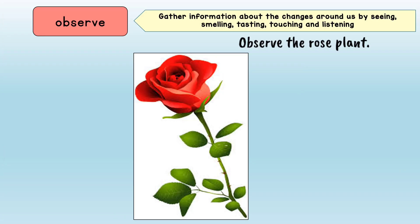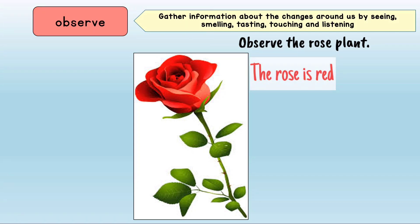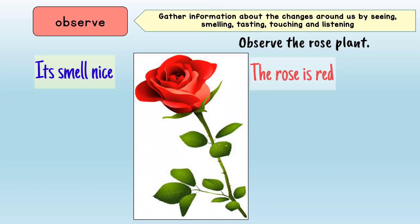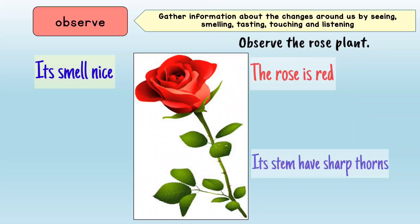Now, let's try this exercise. Observe the rose plant. Yes, we can see — the rose is red. We can smell — it smells nice. We can also touch the rose plant. Its stem has sharp thorns. Ouch!